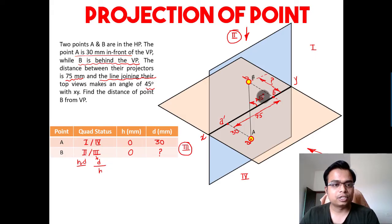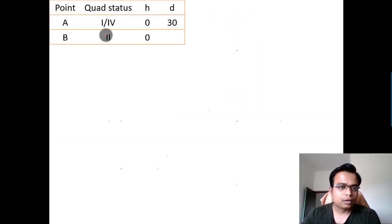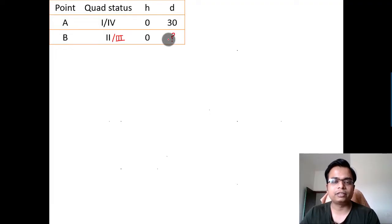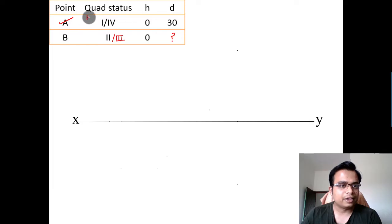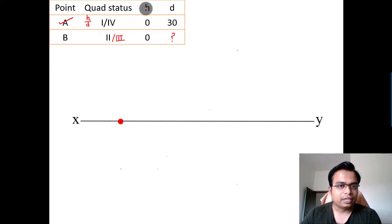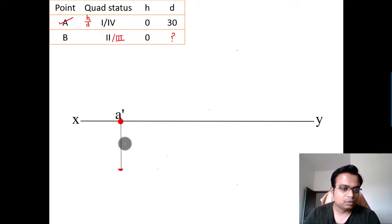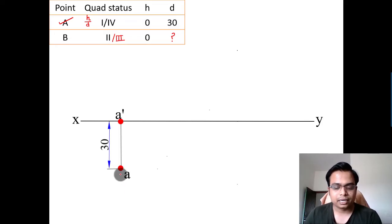Let's begin making the corresponding orthographic projection. We are assuming this is the second or third quadrant — unknown, to be worked out from the drawing. Drawing the XY line: for point A, following the first quadrant HD principle with H above and D below — H is zero so A dash is right on the XY line, and D is 30 below, so point A (without dash) is 30mm below the XY line.